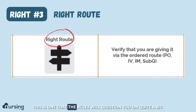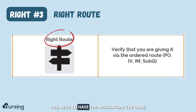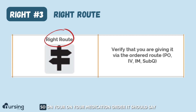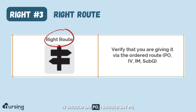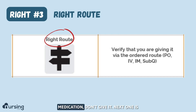Let's go into right route. This is one that the NCLEX will question you on quite a bit. When a medication order is written, you need to have the medication, the dose, and the route. On your medication order it should say IV, PO, PR — it should state the route the medication is to be given. If you don't have a route for a medication, don't give it.